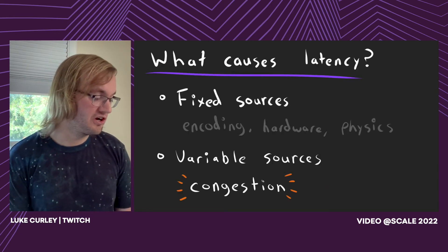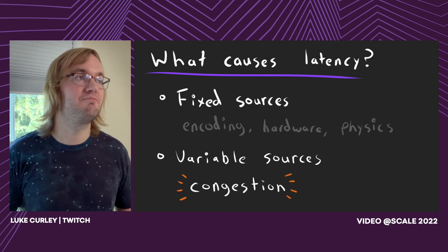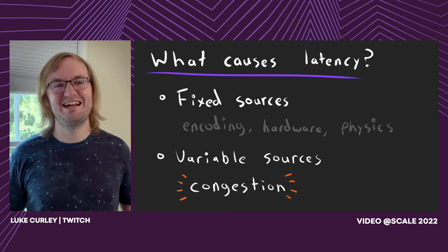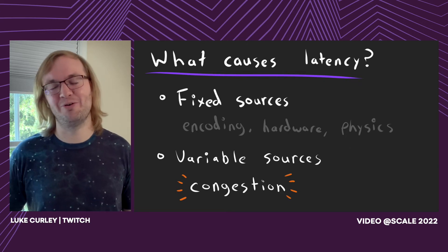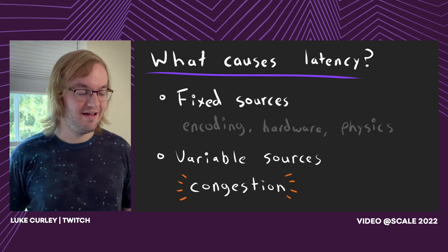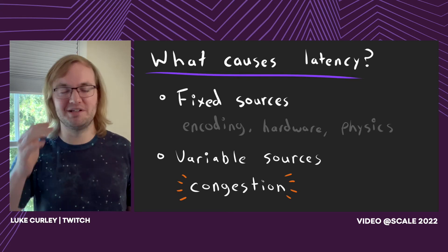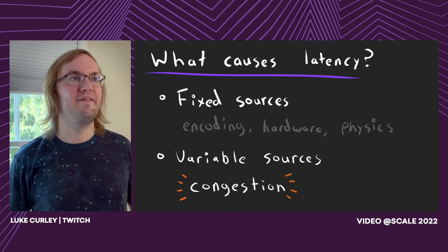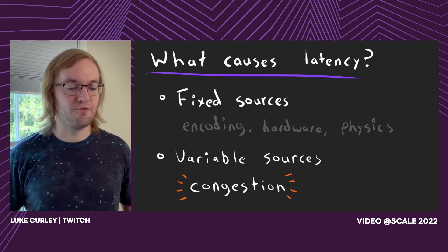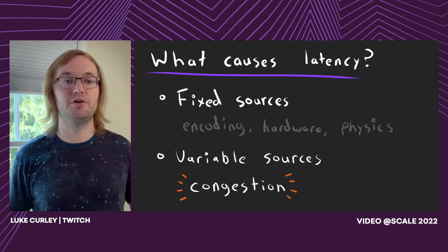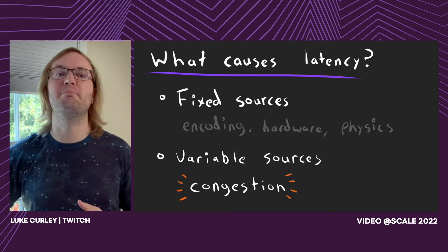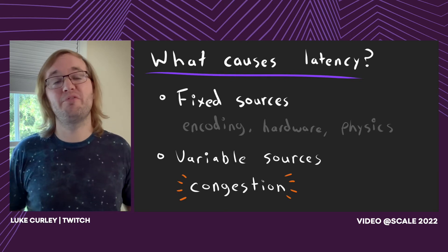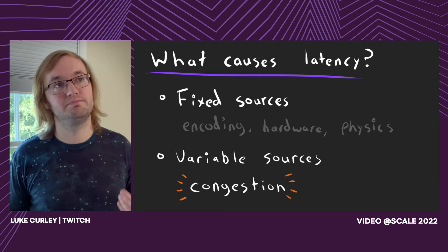Before we can talk about why a protocol is designed in such a way, we need to talk about what we're solving - what causes latency? There are a few fixed sources: encoding latency, speed of light, hardware. We can't really improve those too much - that's the minimum latency. But for HLS, Dash, and a lot of TCP-based protocols, we really care about the variable sources of latency - what's the max? More or less it comes down to network congestion, since networks have a variable speed. When they get slow, things start backing up.